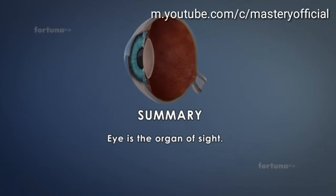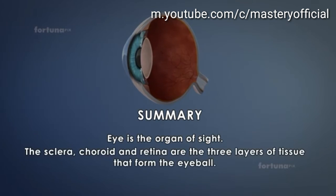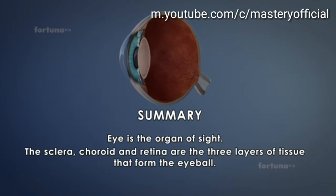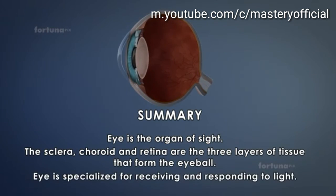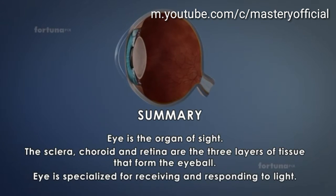Summary: the eye is the organ of sight. The sclera, choroid, and retina are the three layers of tissue that form the eyeball. The eye is specialized for receiving and responding to light.